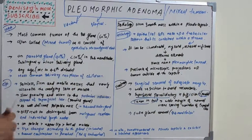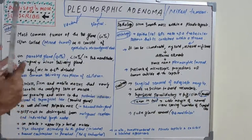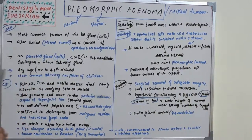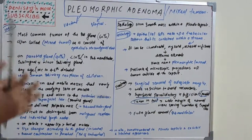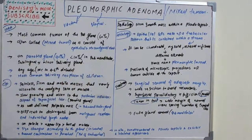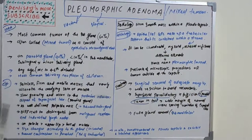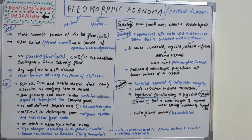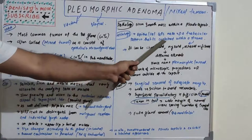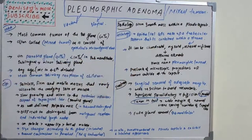Pathologically, it presents as a firm smooth mass within a pseudo-capsule. The histological feature is important: the epithelial cells make up a trabecular pattern combined within a stroma.